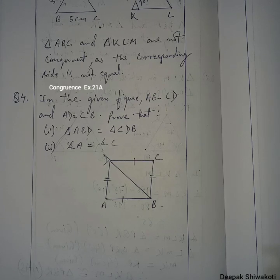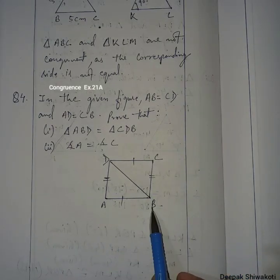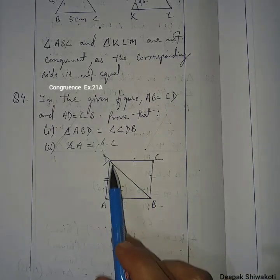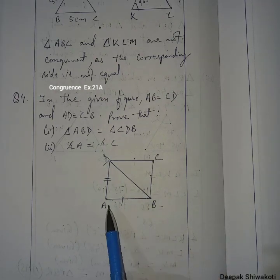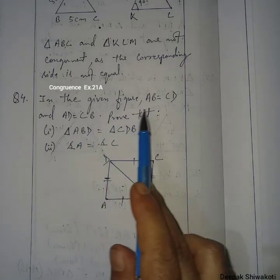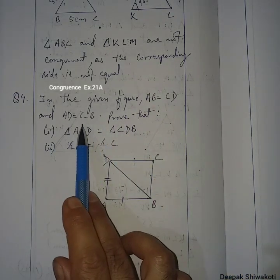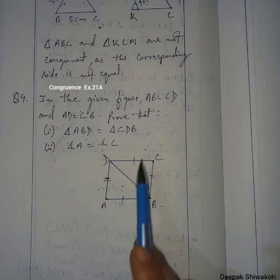Welcome to Class 7 Mathematics. We are in Chapter 21, Exercise 21A, Question Number 4. In the given figure, AB is equals to CD — these two sides are equal. And AD and CB are also equal. So it is given that AB equals CD and AD equals CB.